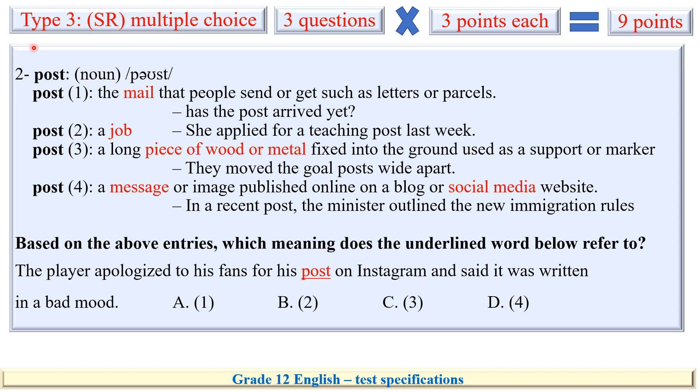In addition to an idiom, you can be given a question about a dictionary entry. You'll be given a word, this is its part of speech, its transcription or pronunciation, and this word has got four different meanings. The question is based on the above entries, which meaning does the underlined word below, this one, refer to? Read the four entries or four meanings and then decide. Need help? The player apologized to his fans for his post on Instagram. Post here, does it mean mail or job or piece of wood or metal or message written on a blog or social media? I think you've got it, it's very easy.